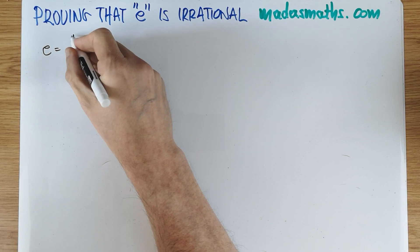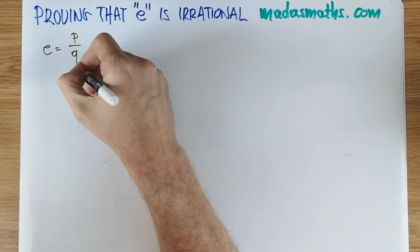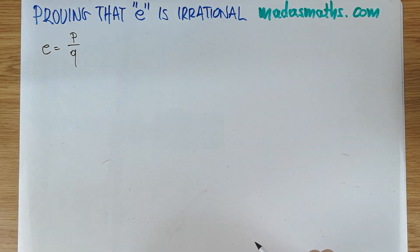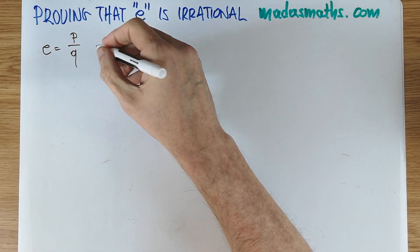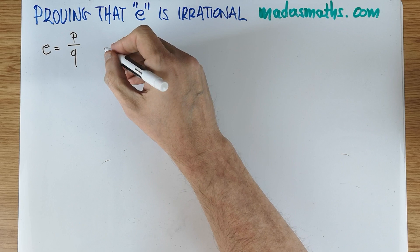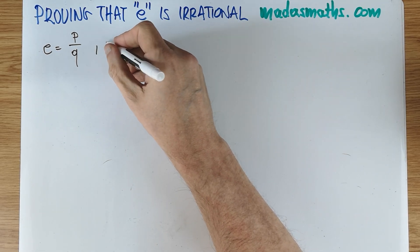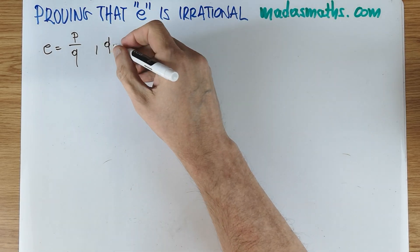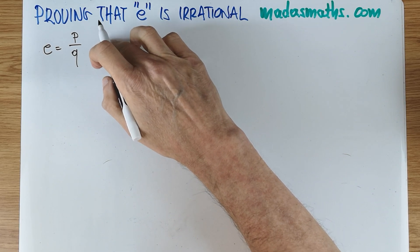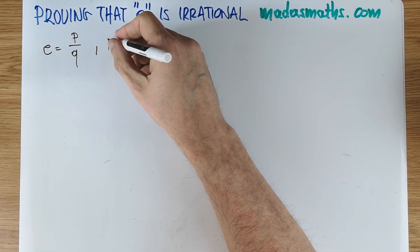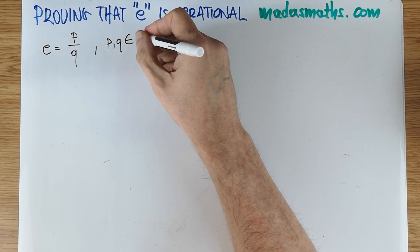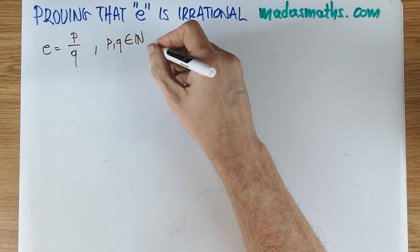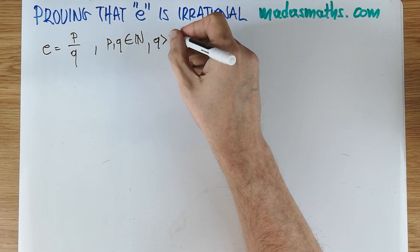So I'm going to do my contradiction and it's something of the form p over q. And let's say these are now integers in the simplest form and q is a number which I should really write everything down.